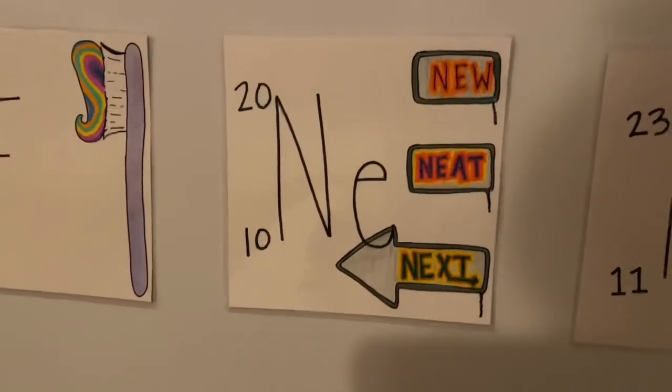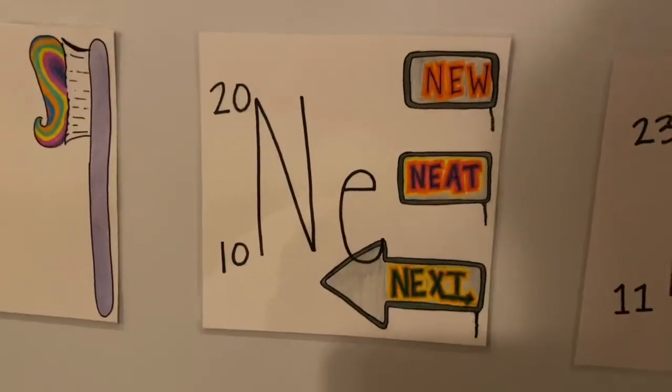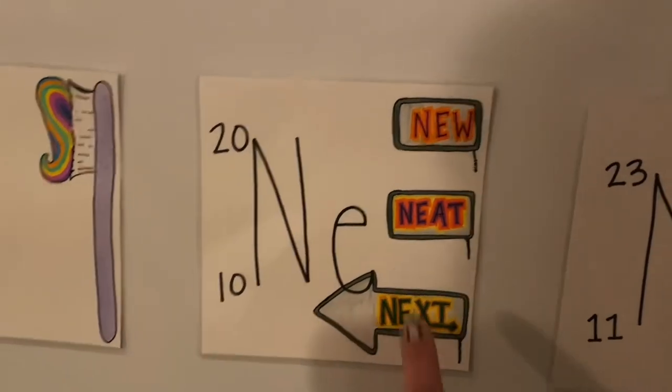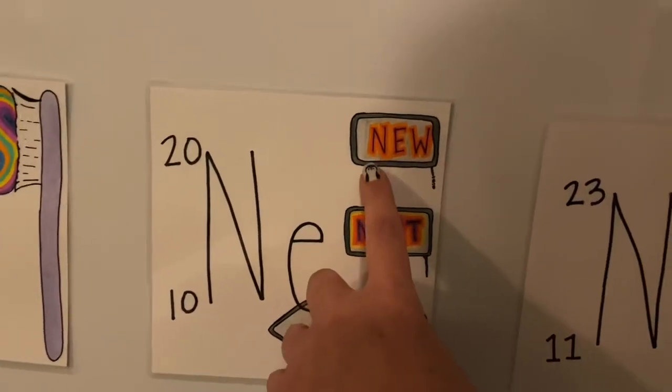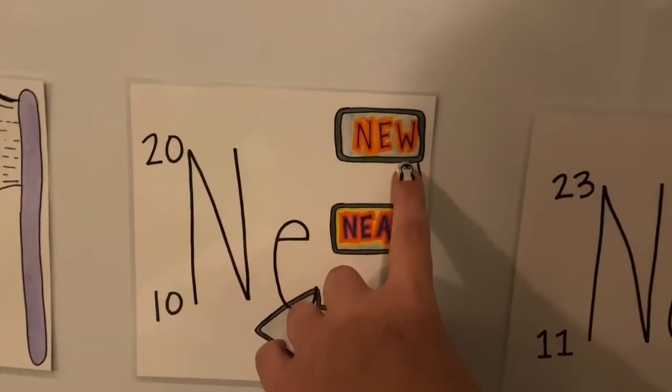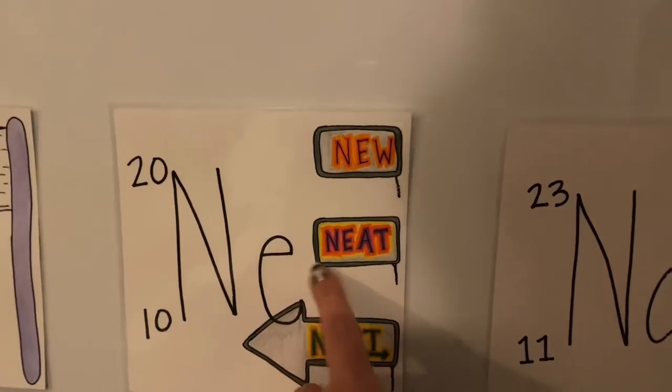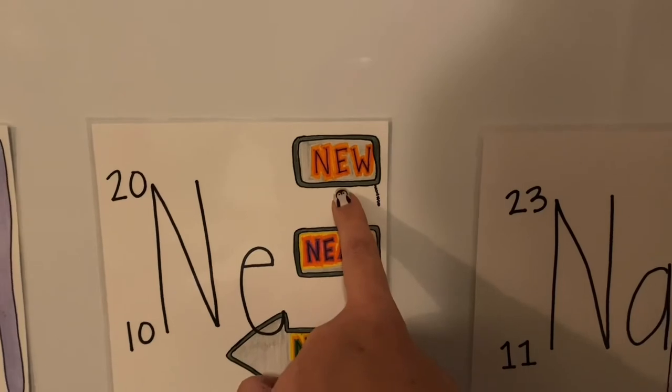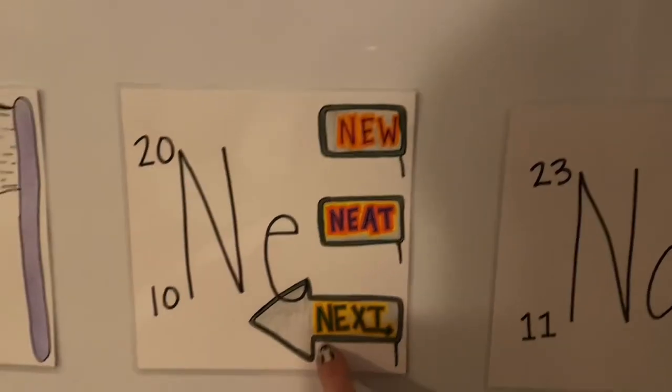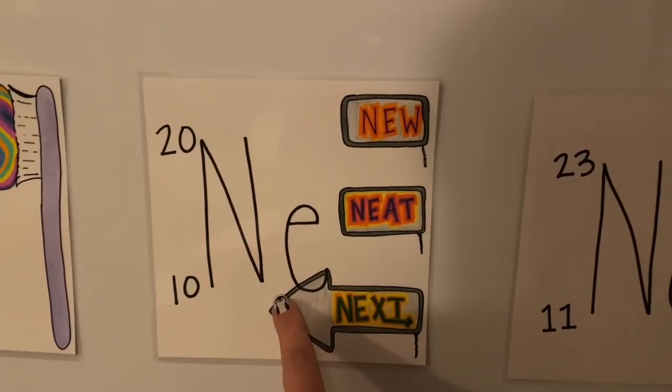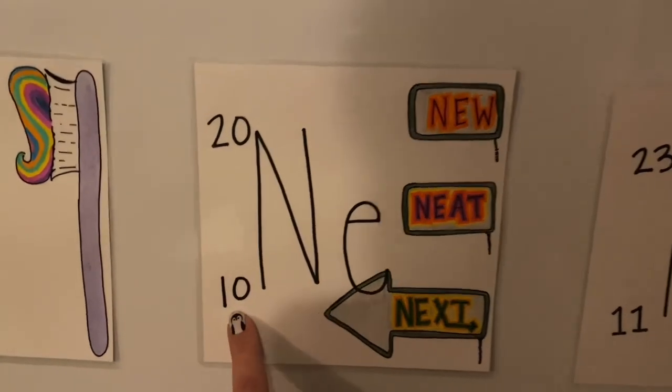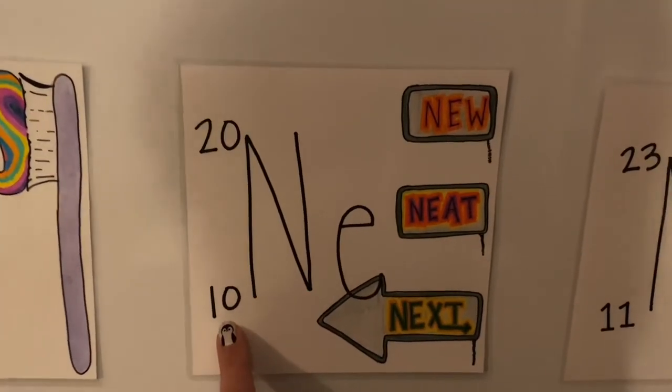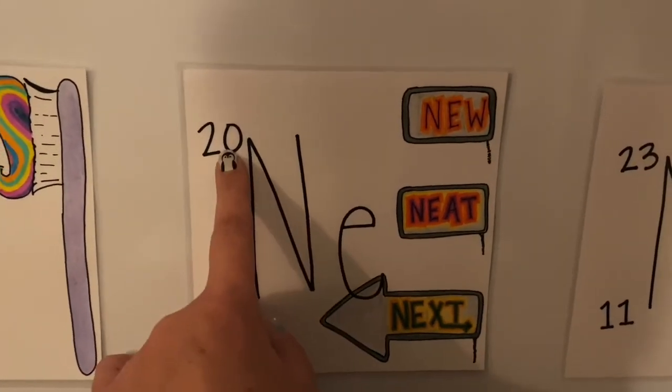The next one that we have is N-E. Neon. Look at all these neon signs. We have a new neon sign. We have a neat neon sign. And a next. They all start with N-E. So this is a good way for us to remember neon. N-E. Atomic number is 10 times 2. This is an even number. Times 2 is 20.